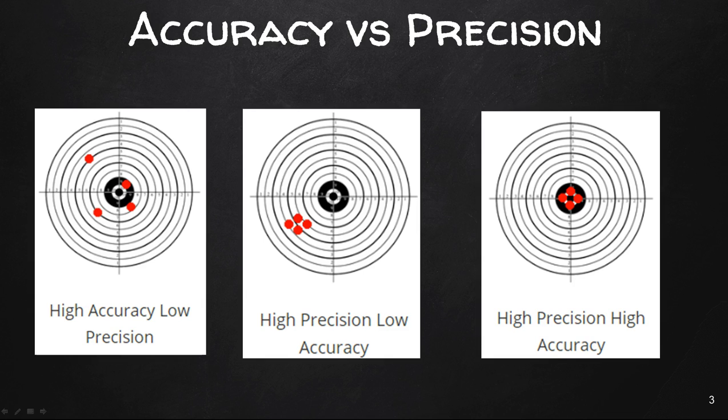GPS data collection devices have varying levels of accuracy and precision. For example, the Trimble Geo Explorer series has both high accuracy and high precision, while the Trimble Juno 3 series, which we use in this class, has low accuracy and high precision.